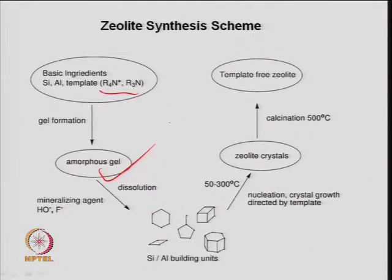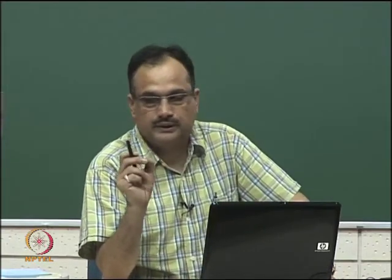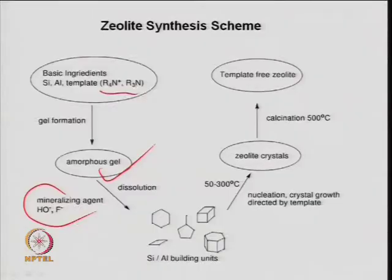Under certain conditions of temperature and in the presence of hydroxyl ions, a gel forms. This gel structure formation is very crucial because it is a kind of primary building of the structure, or a foundation of the zeolite matrix. Matrix formation will come based on this amorphous gel structure. You may add some mineralizing agent because the hydroxyl ions provide hydrated H into the group and also control the pH during the reaction.